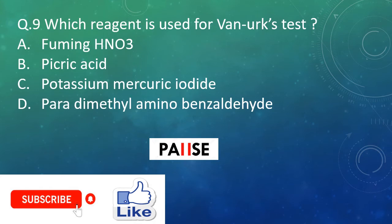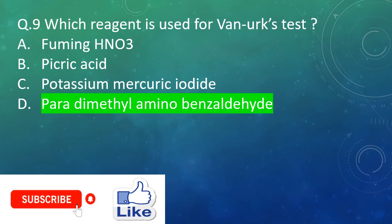Question nine: Which reagent is used for the Van Urk test? Option A: Fuming HNO3. Option B: Picric acid. Option C: Potassium mercuric iodide. Option D: Para-dimethylaminobenzaldehyde. And the right answer is Option D: Para-dimethylaminobenzaldehyde.